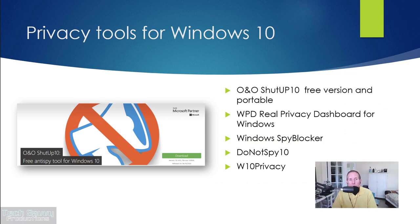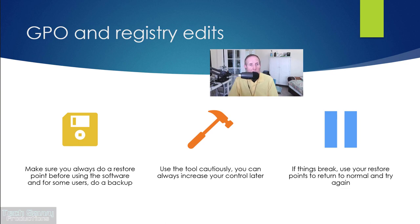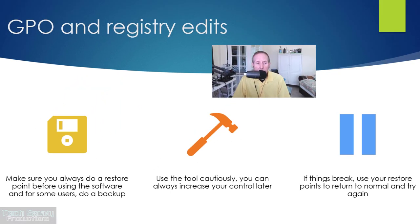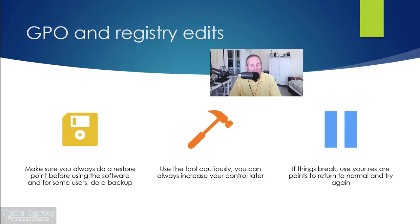Among privacy tools for Windows 10, here are some I discovered: O&O ShutUp 10 — free, portable, and my preferred option; WPD Real Privacy Dashboard; Windows Spy Blocker; Do Not Spy 10; and Win 10 Privacy. Notes with web addresses will be available for download. Most of these tools use GPOs and registry edits to lock down Windows and restrict privacy leakage. Always create a restore point before using the software. Use the tools cautiously — you can always increase control later. If things break, use your restore point and try again carefully.